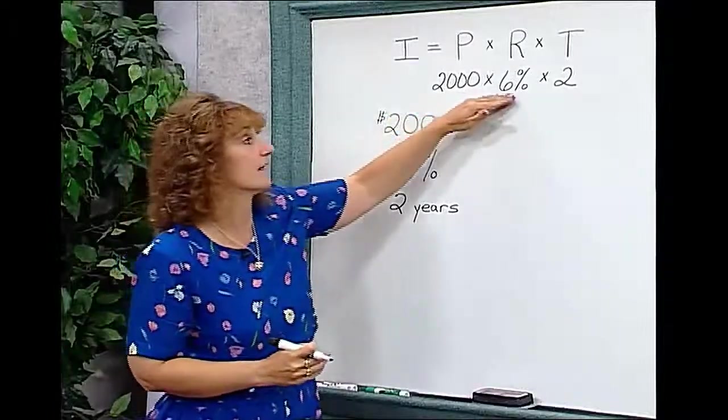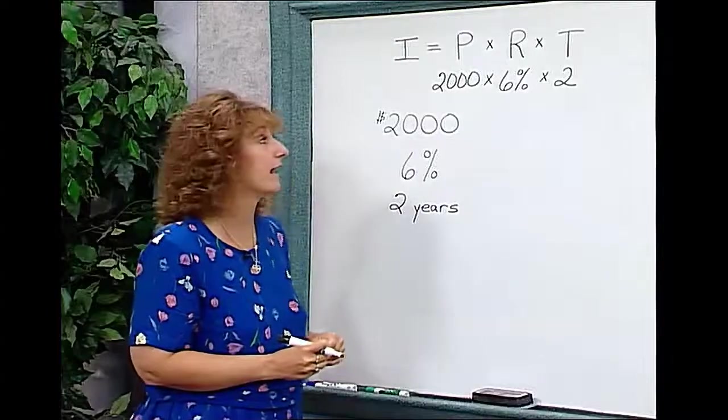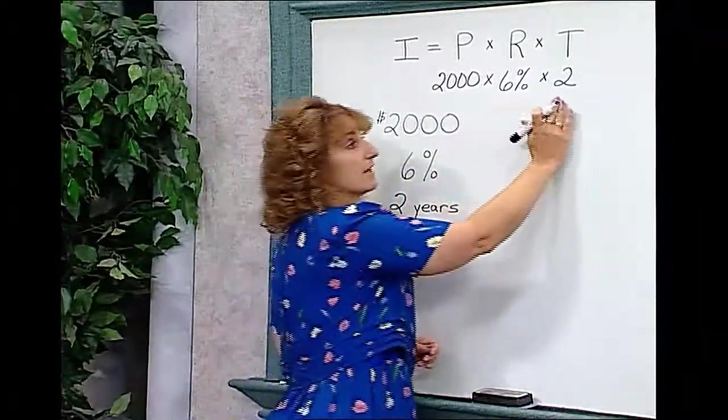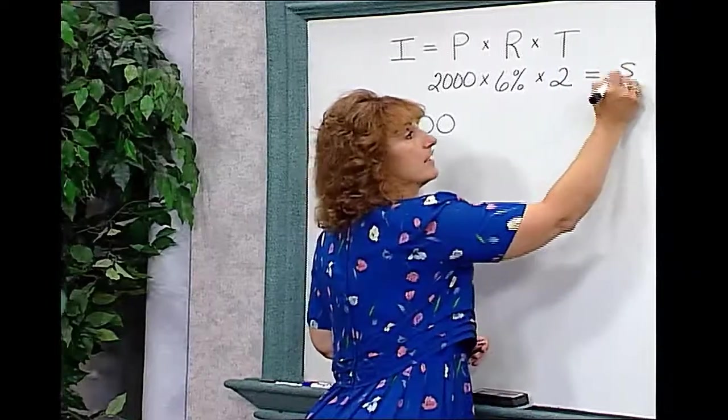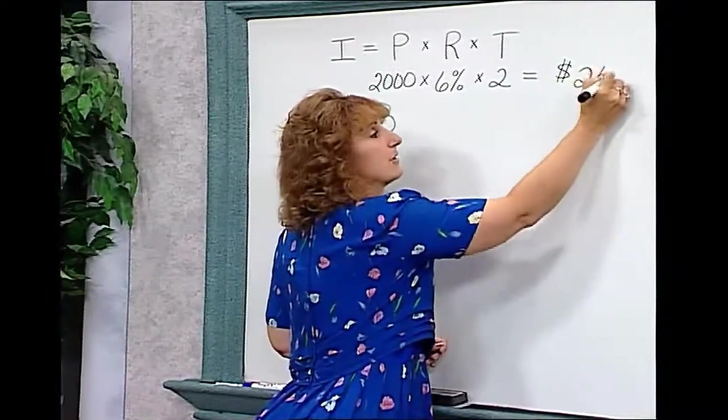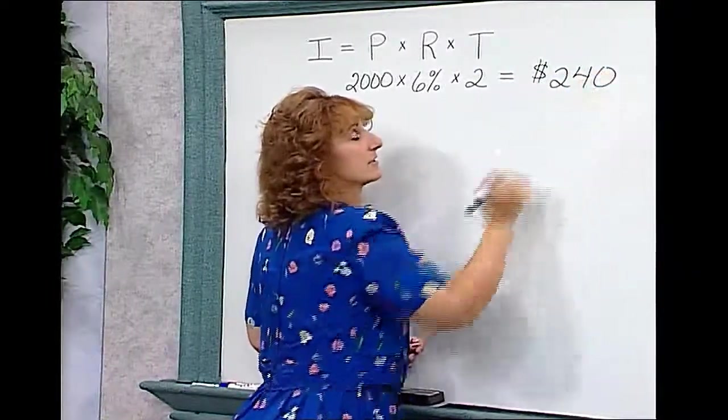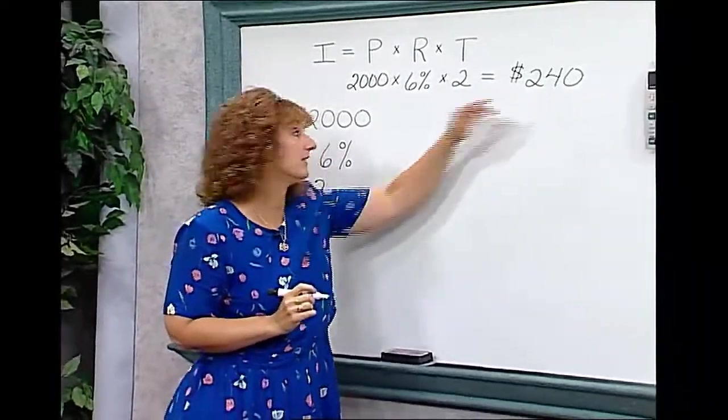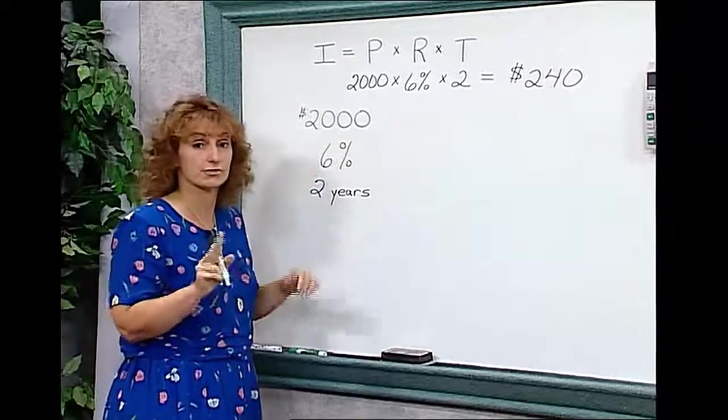You can do this on the calculator or you can multiply it out. But either way, 2,000 times 6% times 2 is going to give us $240 interest. That's the amount of money the bank will pay you for leaving your $2,000 for 2 years.